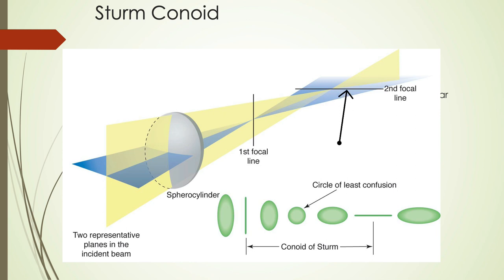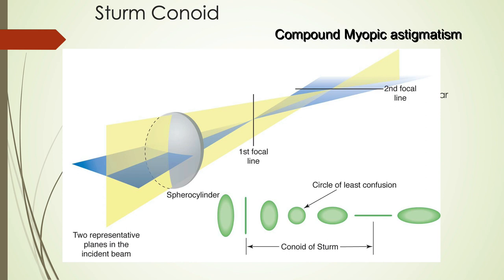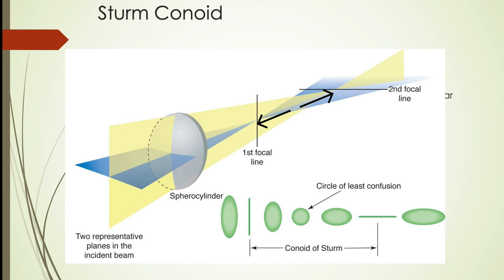At the second focal line, the vertical rays come to a focus while the horizontal rays are divergent, having already focused at the first focal line. If the retina was at the second focal line, the type of astigmatism manifested would be simple myopic astigmatism; all points beyond this focal line manifest compound myopic astigmatism. Between the first and second focal lines, since one meridian has already come to focus while the other has not, a mixed astigmatism will be manifested.